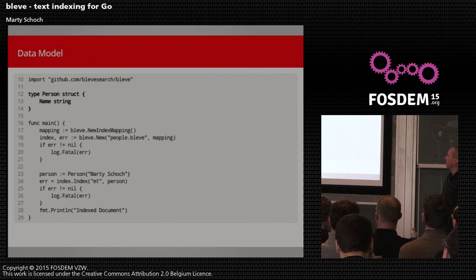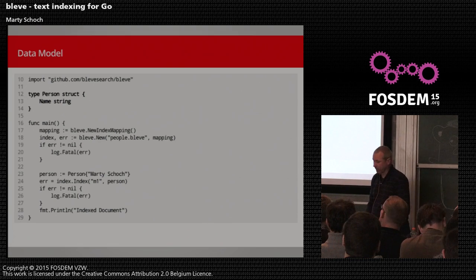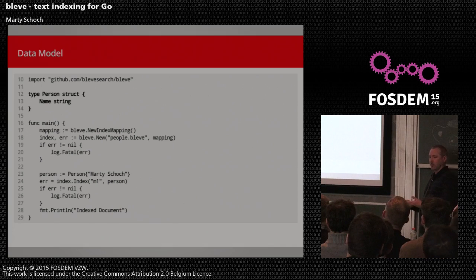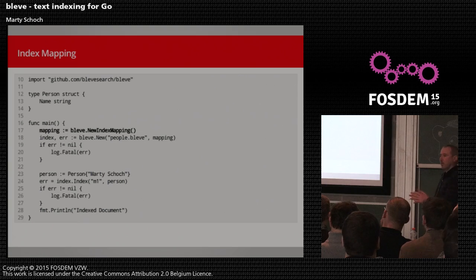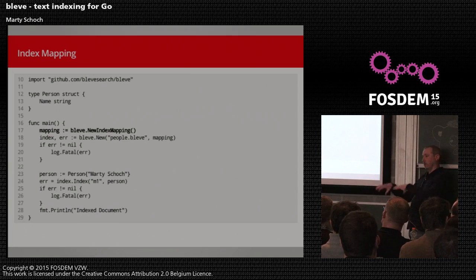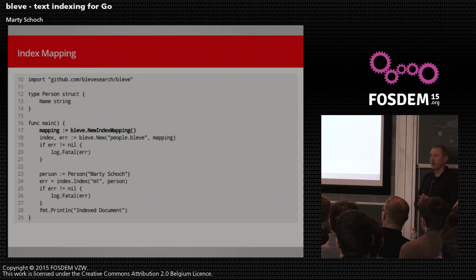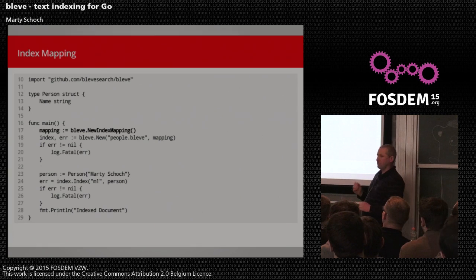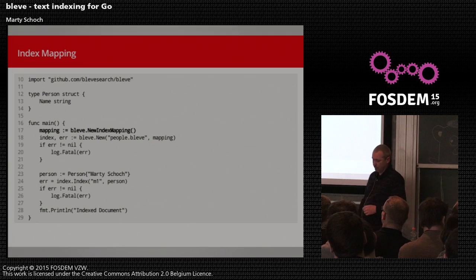Once we've imported the package, we look at the data model. I've defined a struct named person with a field called name of type string — the very simplest thing we could work with. Bleve internally uses reflection to discover what's going on and make the most sense out of your object. The next step is creating a mapping. The mapping takes your document and data model and turns it into what's going to be put into the index. Using new index mapping gives you a default mapping, and we've done a lot of work to make that default mapping as useful as possible. The mapping is so important for getting high quality results that we kept it in the face of the user — you're never going to forget it's there.